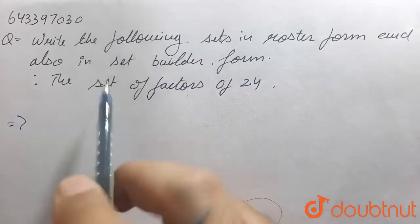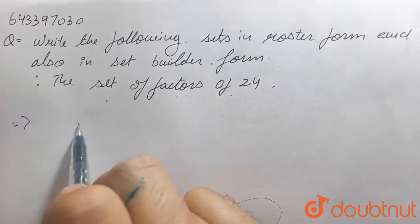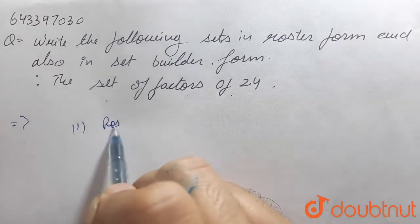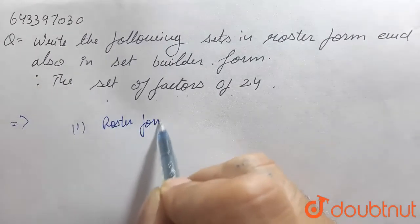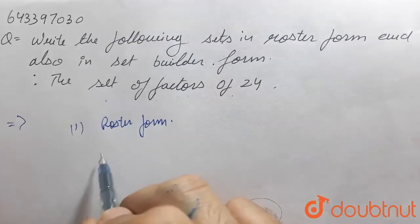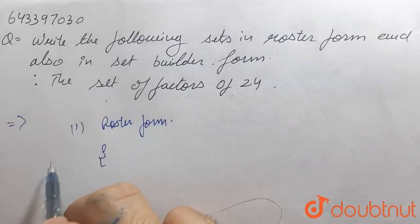Here our set is the set of factors of 24. So, in roaster form, it can be written as, let this is set A.